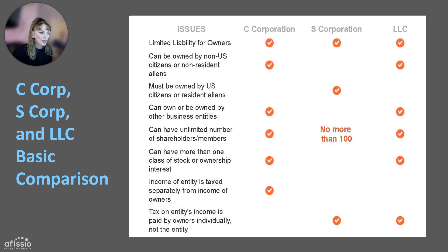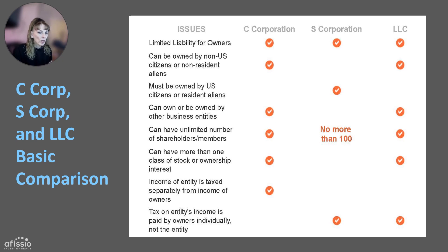Income of the entity is taxed separately from income of owners — that only applies to the C-corporation. For the S-corporation and LLC, the tax on the entity's income and deductions flow through to the owners. The biggest takeaway when selecting your entity type should be an analysis of how each entity is taxed, both on the company and on the owners. For any tax-related questions, be sure to consult a tax professional.